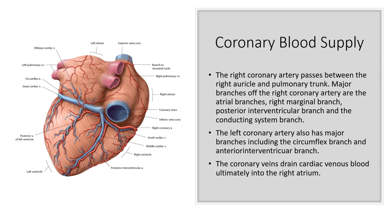The right coronary artery passes between the right auricle and pulmonary trunk. Major branches of the right coronary artery are the atrial branches, right marginal branch, posterior interventricular branch, and the conducting system branch. The left coronary artery also has major branches including the circumflex branch and the anterior interventricular branch. The coronary veins drain cardiac venous blood, ultimately into the right atrium.